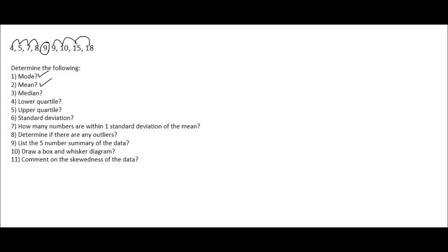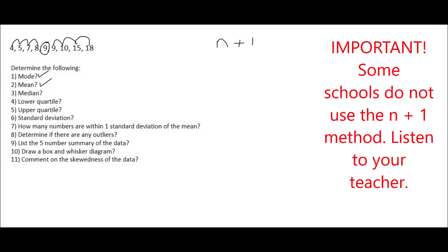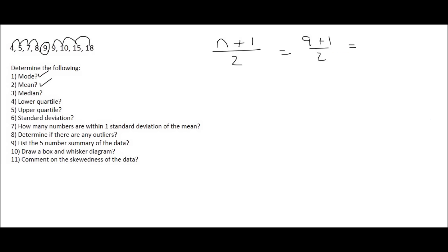Mathematically, the formula is: take the number of items you have, which is nine, add one, and divide that by two. So nine plus one divided by two gives us ten divided by two, which is five. That's not the answer — what it means is you should go to position number five.